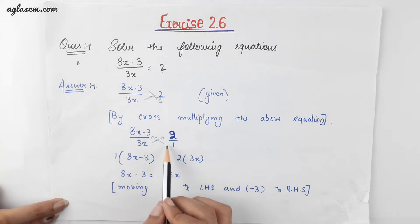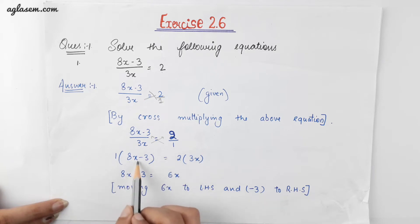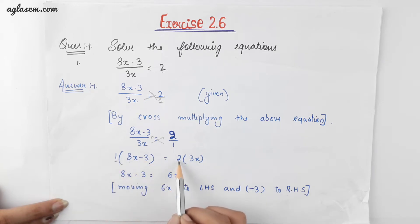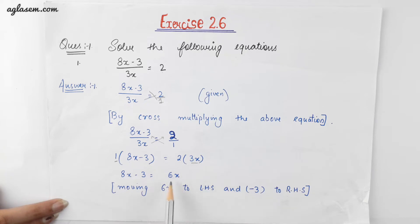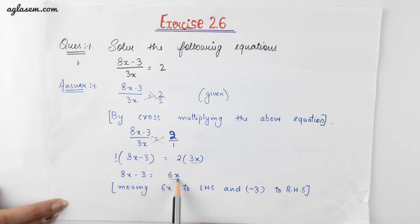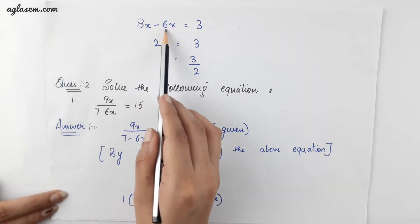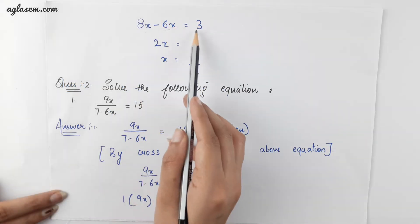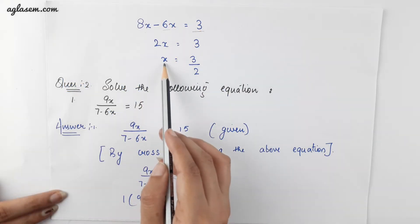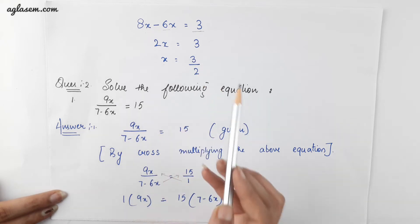While doing the cross multiplication we will get (8x minus 3) multiplied by 1 and 2 multiplied by 3x. Solving the equation we will get 8x minus 3 is equal to 6x. Taking the variables on one side and constants on the other we will get 8x minus 6x is equal to 3. Therefore x is equal to 3 by 2.